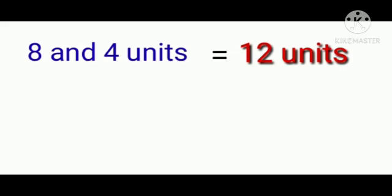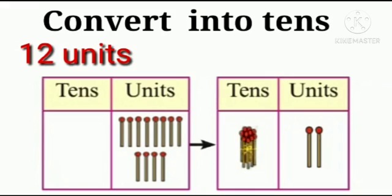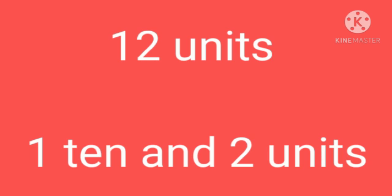Here, 8 and 4 units is equal to 12 units. Now, convert into tens. We get 12 units. Let us make a group of 10. How many single sticks remain? 2. So children, this means that 12 units can be written as 1 ten and 2 units.